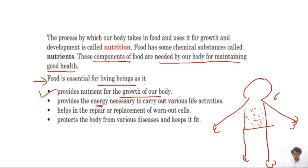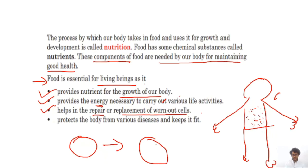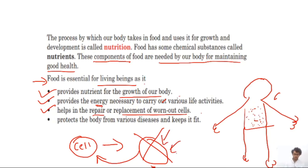Suppose a cell gets damaged — in order for that damaged cell to become a healthy cell, it actually needs nutrients so that it can repair itself. Point four: food protects the body from various diseases and keeps us fit.